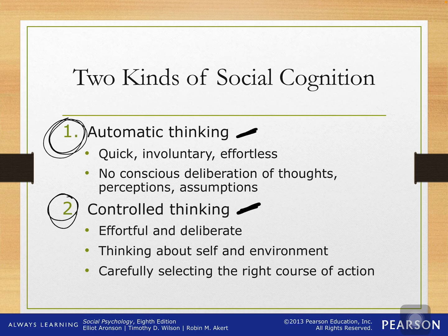Controlled thinking is that thinking about yourself in terms of your environment, deciding what you want to do, where you want to go, do you want to engage with this person? Maybe you see somebody and you think, that person looks friendly, I think I might go ahead and talk to them. That's a more controlled thinking — you're thinking about your environment, putting effort into it, thinking about pros and cons, thinking about your next step.